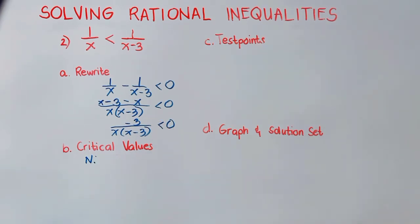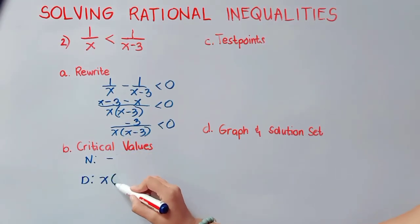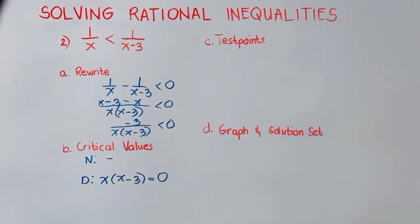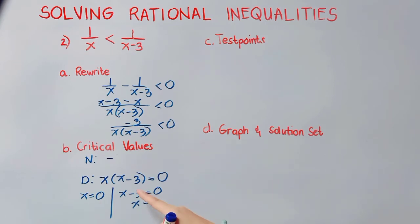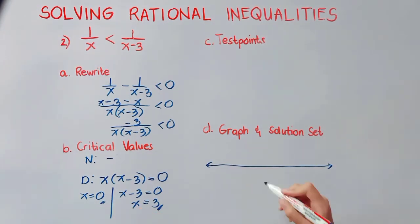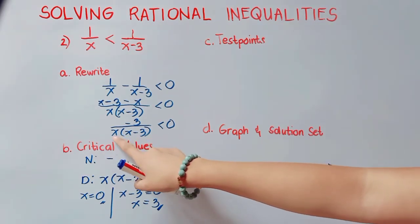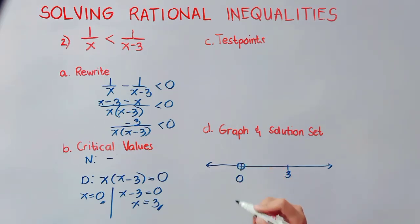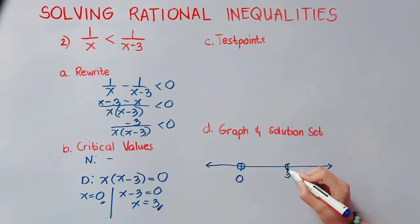There is no x variable in the numerator, so we proceed to the denominator. Our LCD is x times quantity x minus 3, equated to 0. By the zero product property, if the product is 0, then either factor or both equals 0. So our critical values are 0 and 3. Both will make the denominator 0, which is undefined, so we use hollow points for both.